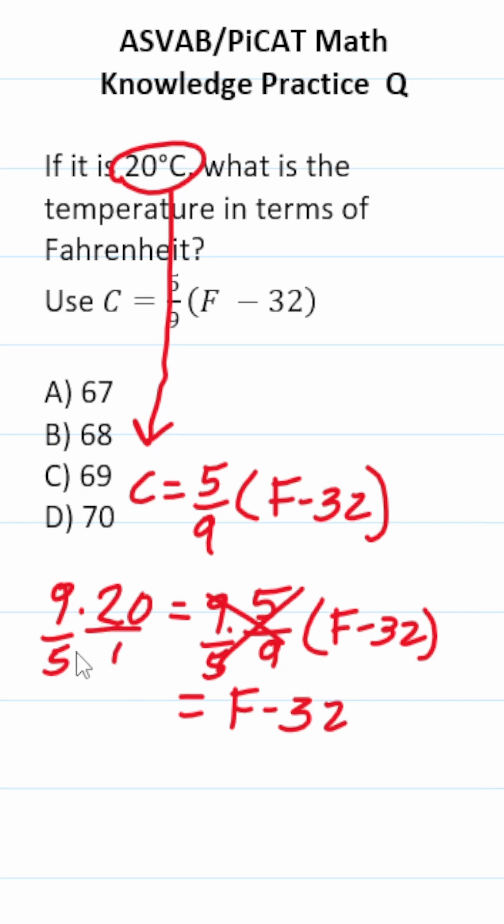Place 20 over 1. Now cross-reduce. 5 goes into 5 one time. 5 goes into 20 four times. 9 over 1 is just 9. 4 over 1 is just 4. 9 times 4 is 36.